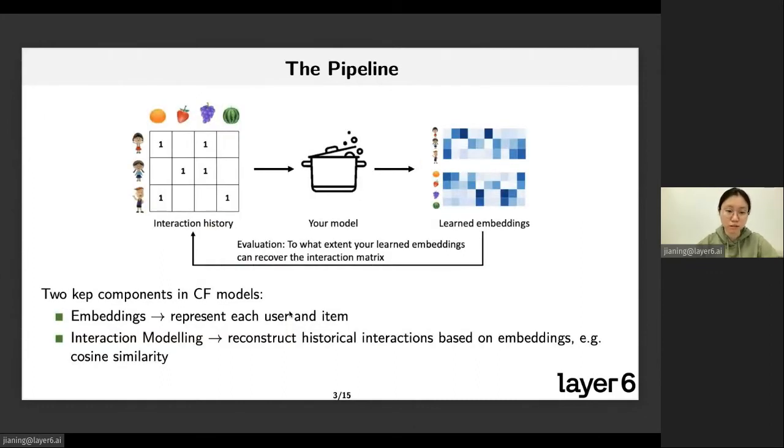Now I will briefly explain the pipeline for building a recommender system by collaborative filtering. The input of the pipeline is the interaction matrix between users and items, where one denotes a click or purchase between a user and item. Zero means no interaction observed in training.